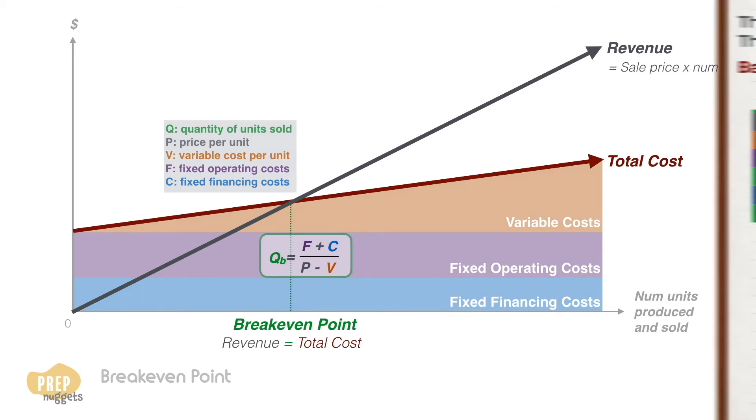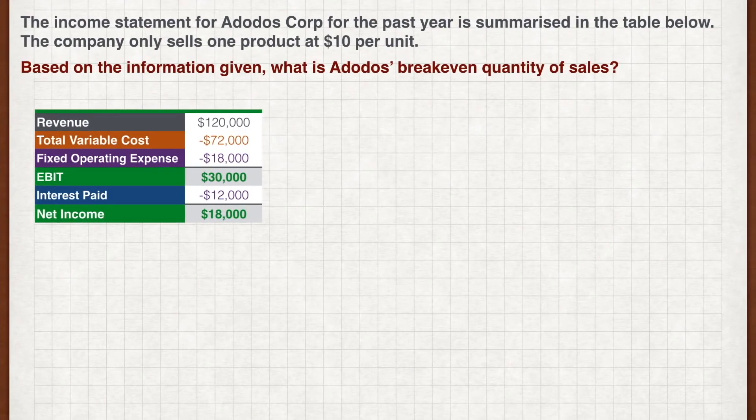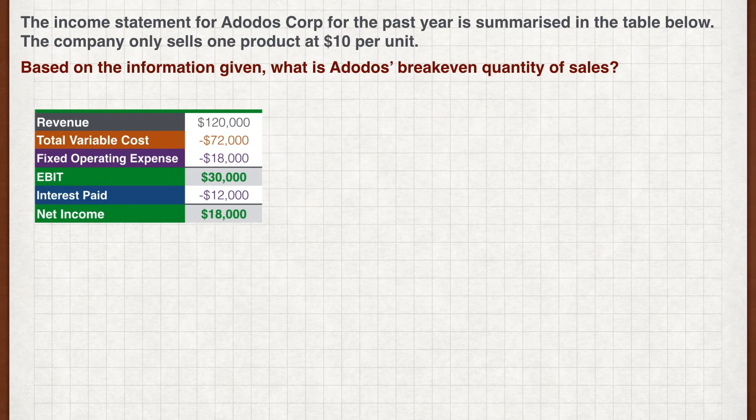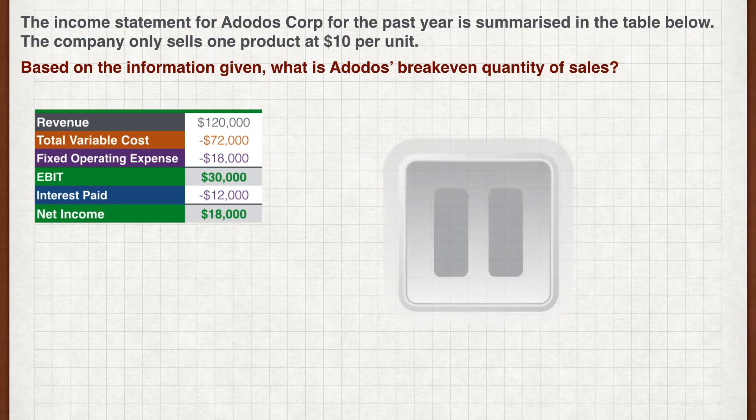Let's look at an example. The income statement for Adodas Corp for the past year is summarised in the table below. The company only sells one product at $10 per unit. Based on the information given, what is Adodas' break-even quantity of sales? Pause the video now and work out your answer.